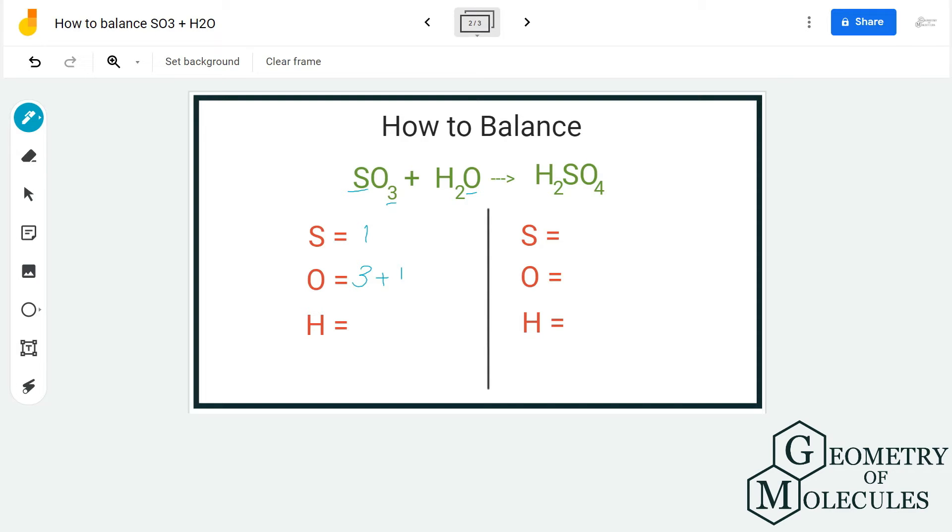four oxygen atoms. Make sure to count each and every atom because that's what makes a difference. For hydrogen, we have two atoms because it's H2O. So we have all the